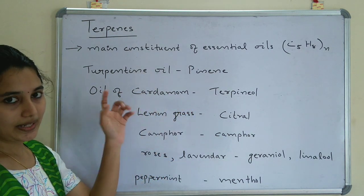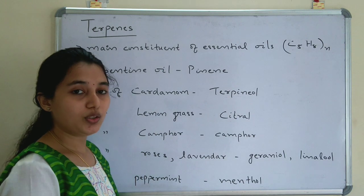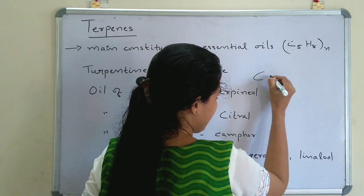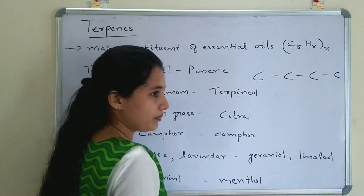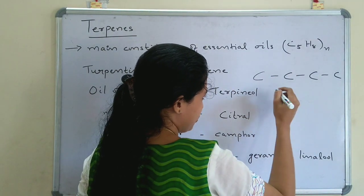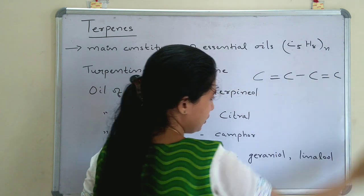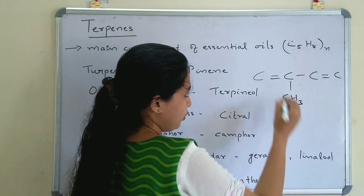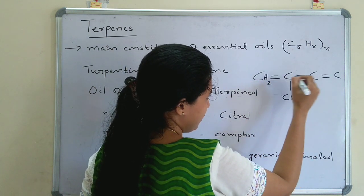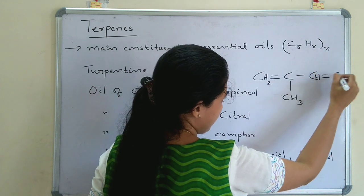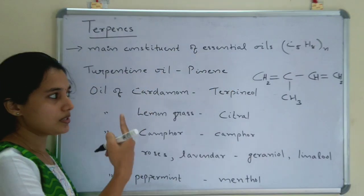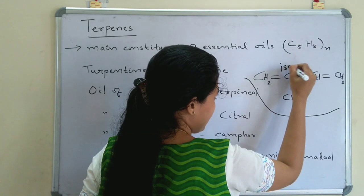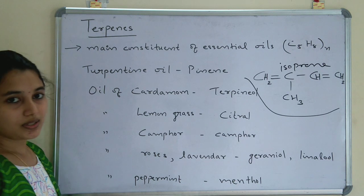The main unit of terpene is the isoprene unit, written as C5H8. Isoprene is 2-methyl-1,3-butadiene: a 4-carbon 1,3-butadiene backbone with double bonds at the first and third positions, and a CH3 group at the second (middle) position — CH2=C(CH3)-CH=CH2. This isoprene unit is the building block of all terpenes.